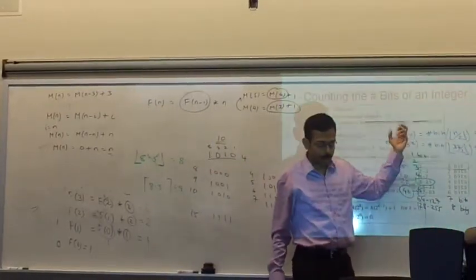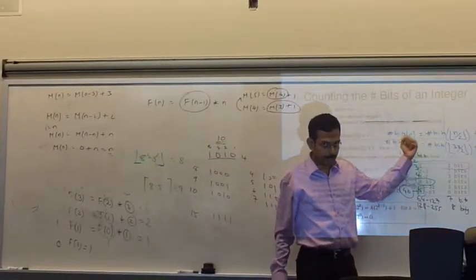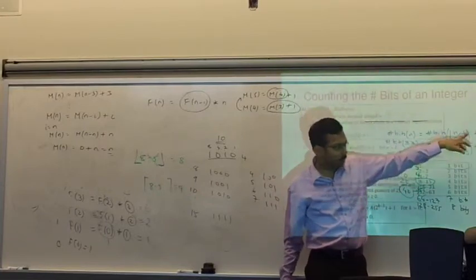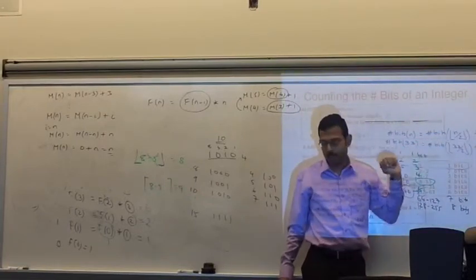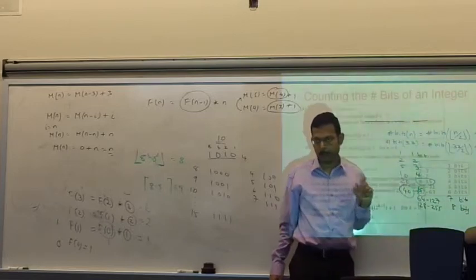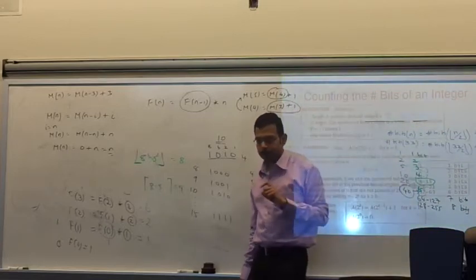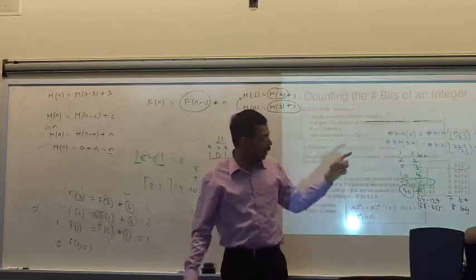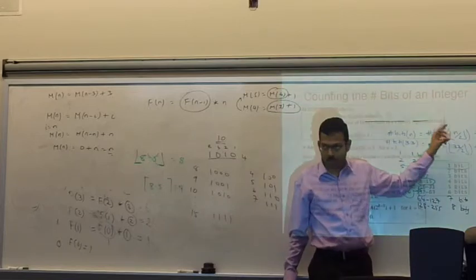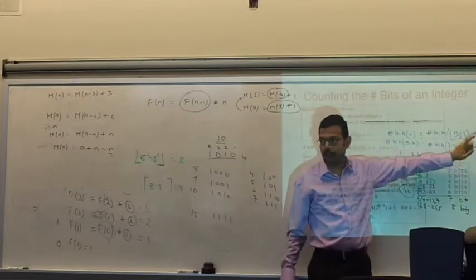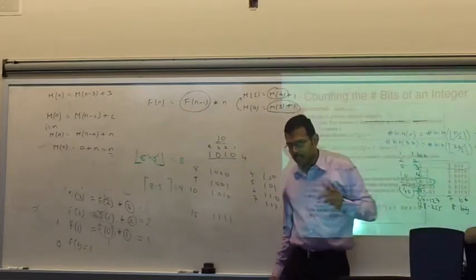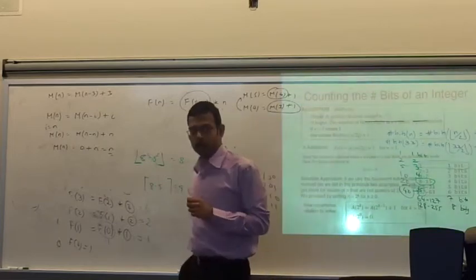This is the recursion, right? The number of bits we find in n is the number of bits we find in n divided by 2, so floor plus 1. Anyone can say what basic operation we are doing here? Division. We are doing a division n over 2 and then we are doing addition. So, addition and division. Which is more time consuming?